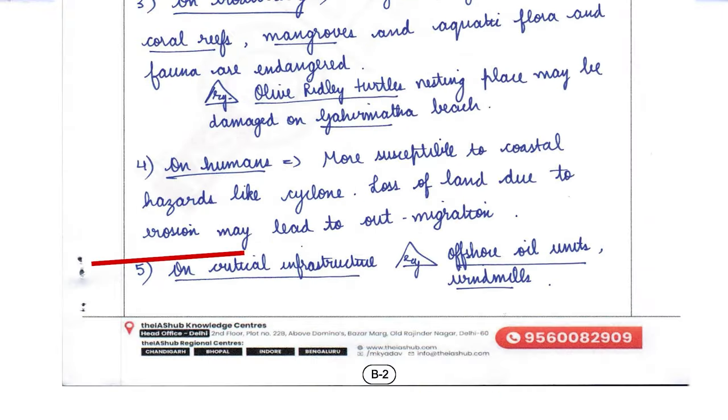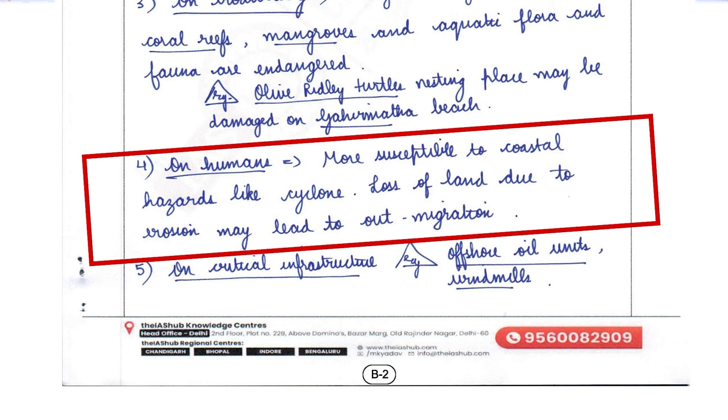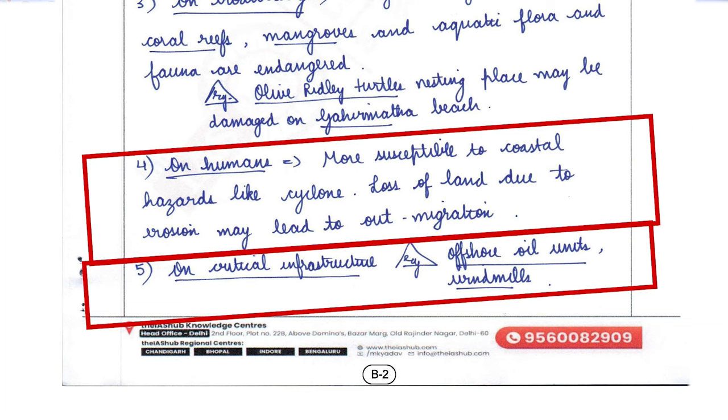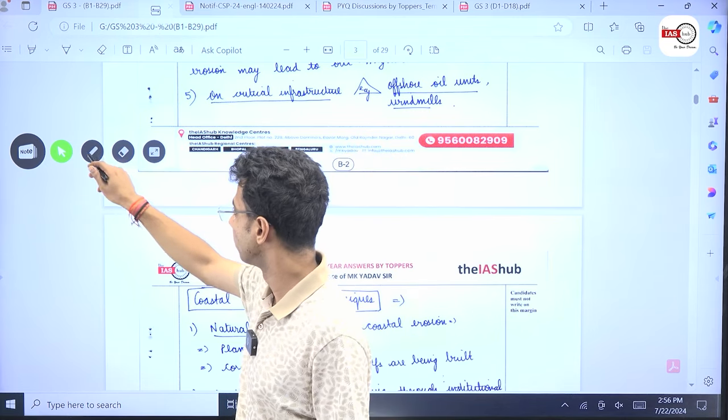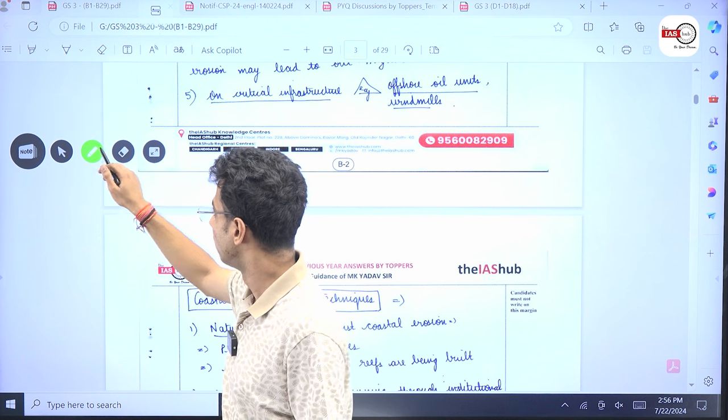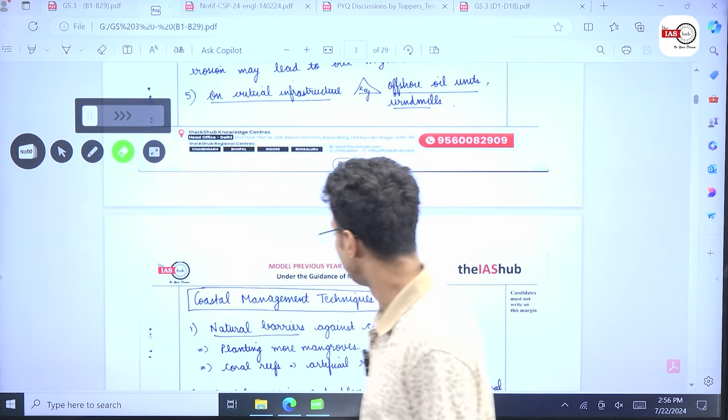Then, on humans more susceptible to coastal hazards like cyclones. Loss of land. Loss of lives could be there. Then, on critical infrastructure. Yes, offshore oil units, windmills. We even have some nuclear power plants on the coastal areas of India.